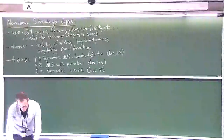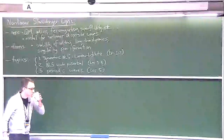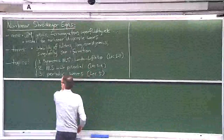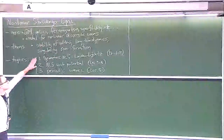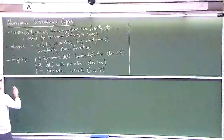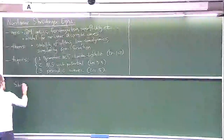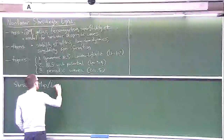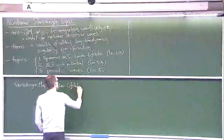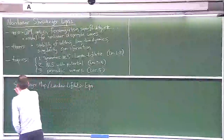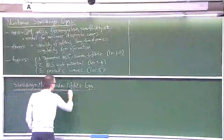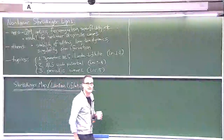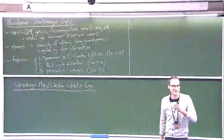Let me jump right into today's topic: the so-called geometric nonlinear Schrödinger equation. More precisely, it goes by two different names — it's sometimes called the Schrödinger map, and as I wrote, it's sometimes called Landau-Lifshitz. Let's start with some preliminaries discussing the setting and the geometry. It'll be a little while before I can actually write the equation, but we'll get there.